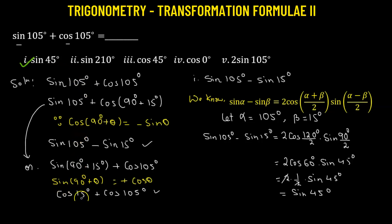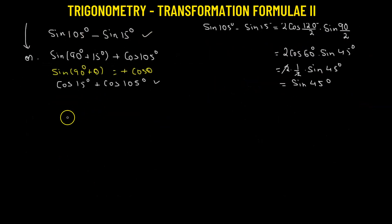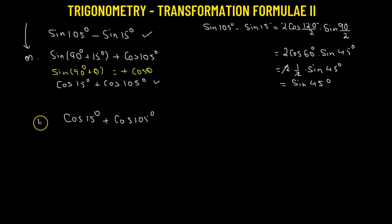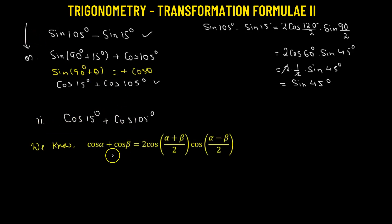Now let's try out the second one: cosine 15 degrees plus cosine 105 degrees. Here we have the sum of two cosine functions, so we'll use another transformation formula: cos α + cos β = 2 · cos((α + β)/2) · cos((α − β)/2).